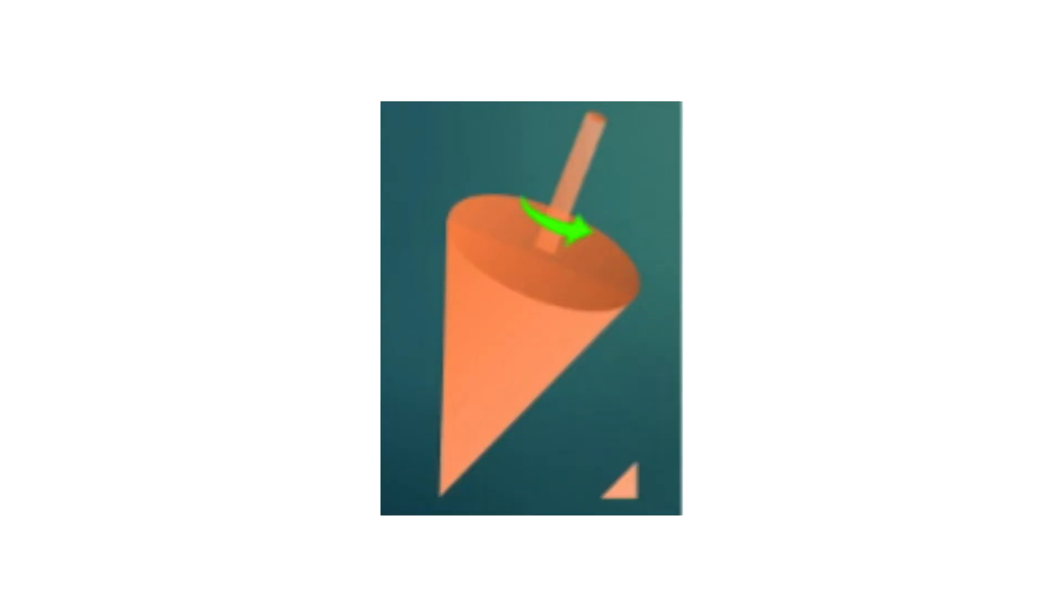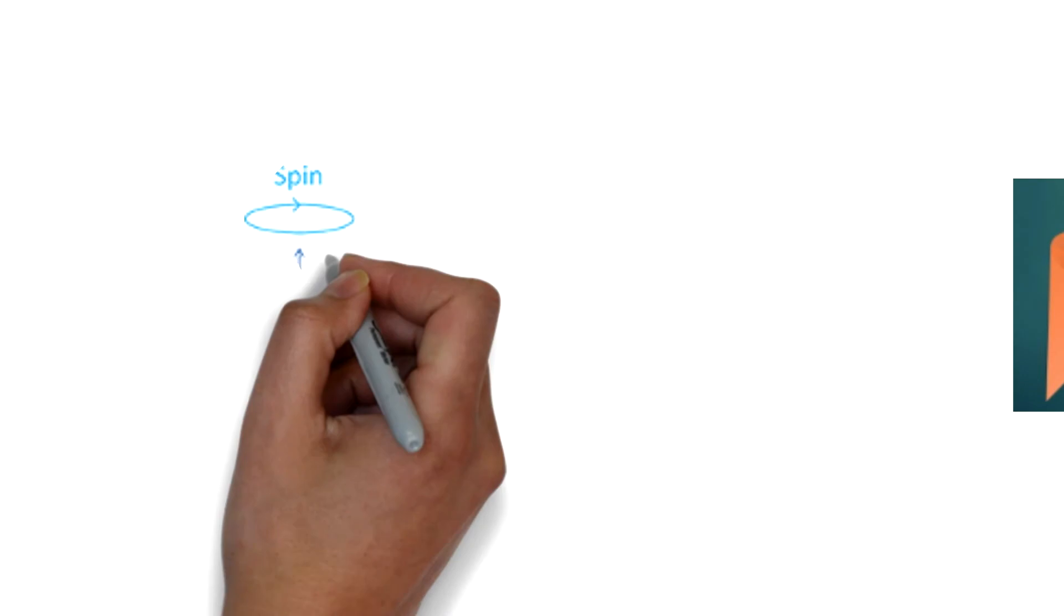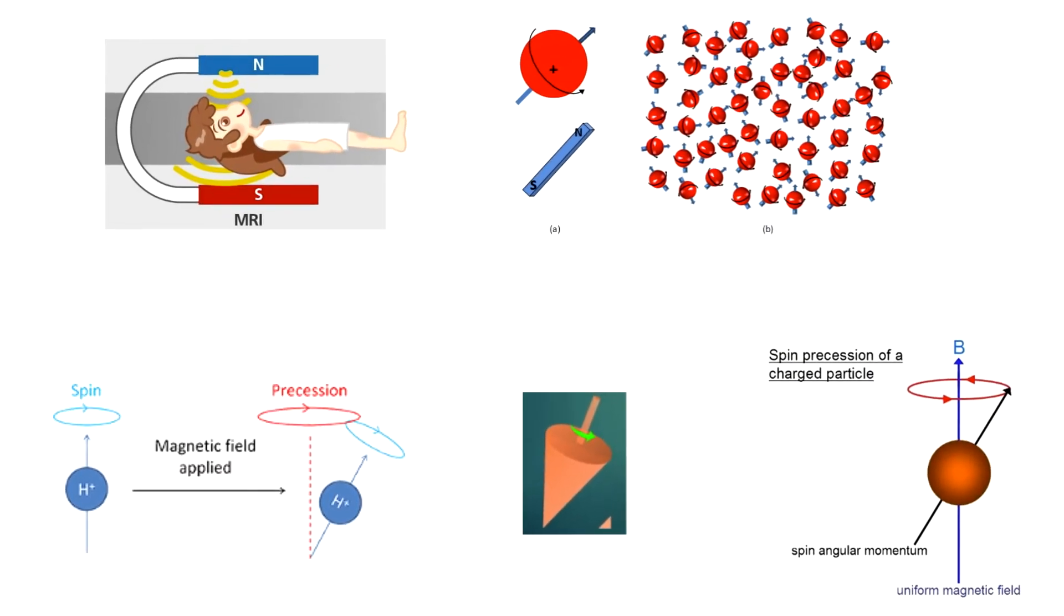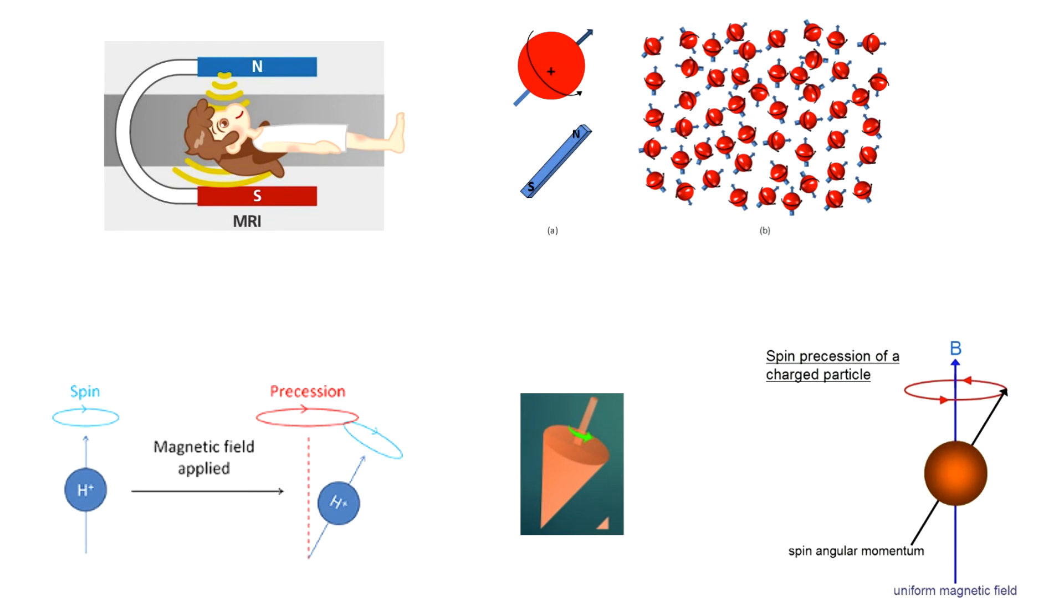So in essence, hydrogen nuclei precess in a magnetic field because they are not aligned exactly parallel or anti-parallel to the field. Instead, they are oriented at an angle to the external magnetic field and precess around it.